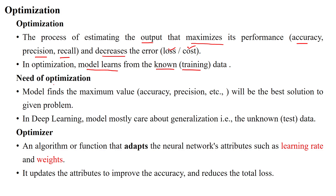Why do we need optimization in machine learning or deep learning? Whenever we are designing a model, we want to find the maximum value — that means maximizing accuracy, precision, recall, etc. — to get the best solution to the given problem statement. Whatever accuracy we achieve with the developed model should be the best solution, maximizing accuracy while decreasing the error.